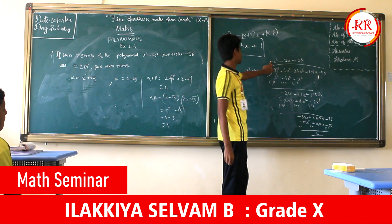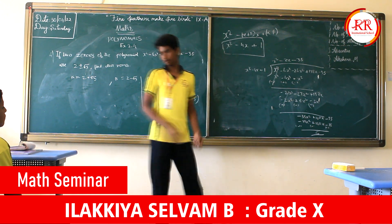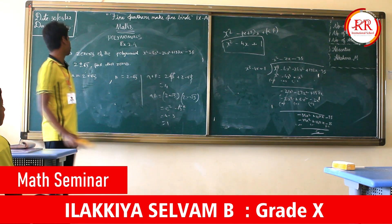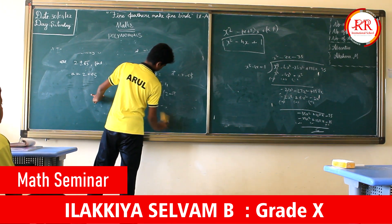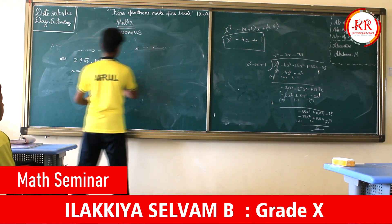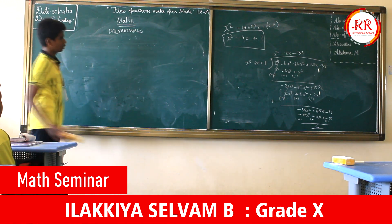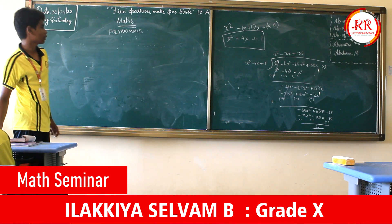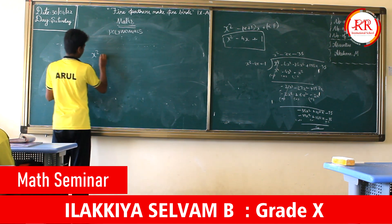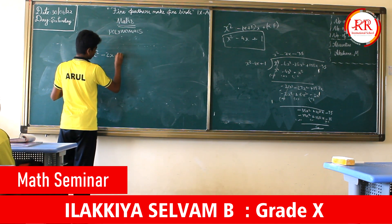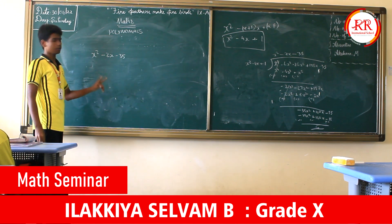We have obtained another quadratic equation as x² minus 2x minus 35. With this we have to find the other two zeros. Since it is a quadratic polynomial, we get two zeros.